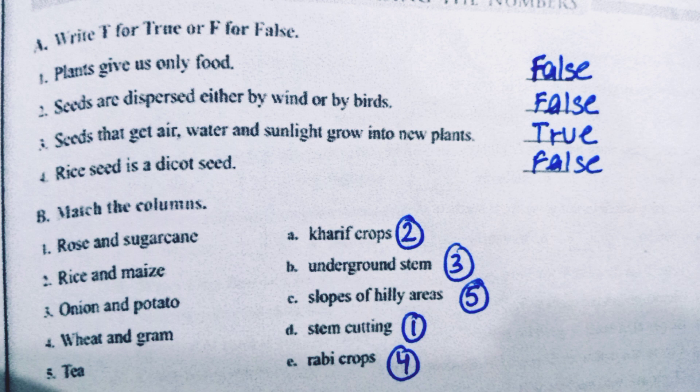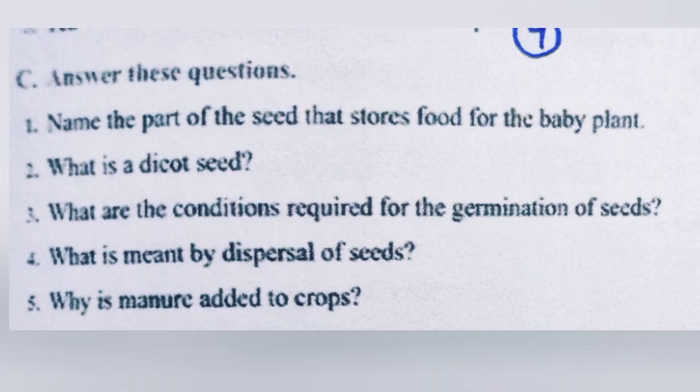Part B is: match the columns. First, rose and sugarcane — we match with stem cutting. Second, rice and maize — we match with kharif crops. Third, onion and potato — we match with underground stem. Fourth, wheat and gram — we match with rabi crop. Fifth, tea — we match with slopes of hilly areas.